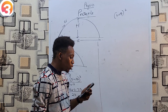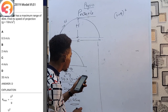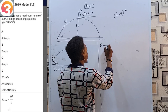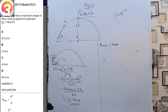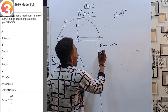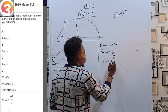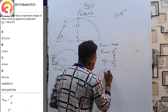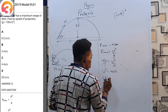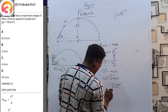Last example: from 2019 Model 2, question 51. A projectile has a maximum range of 40 meters. Find the speed of projection. For maximum range, θ = 45° and R_max = u²/g. So 40 = u²/10, giving u² = 400, therefore u = √400 = 20 m/s. That is option D.